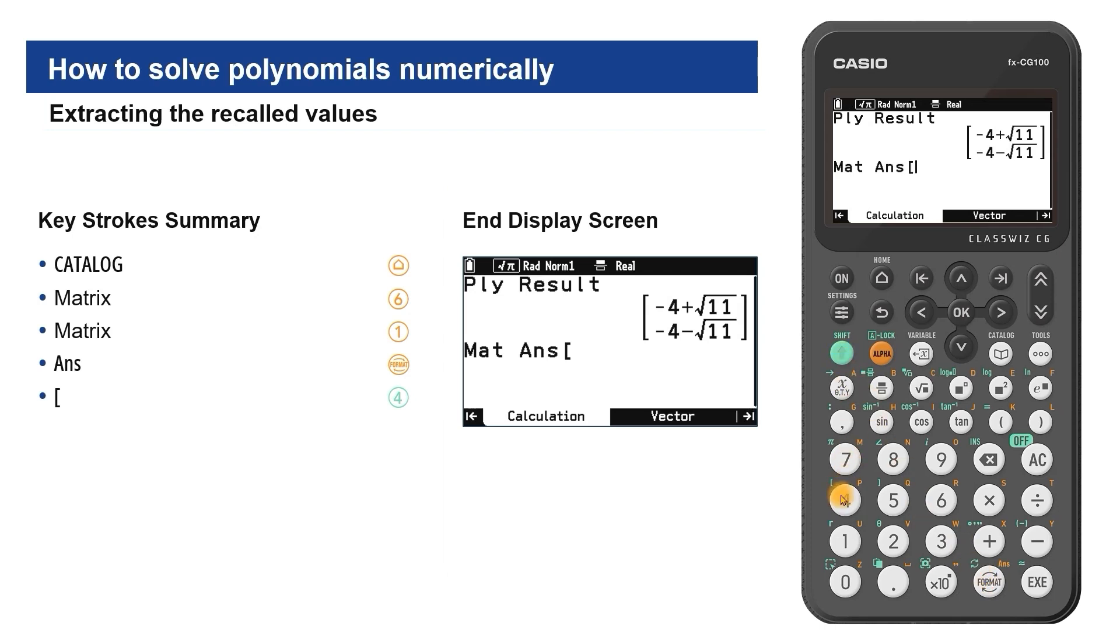If we want to extract the smallest value, negative 4 subtract root 11 for example, this is in the second row in the answer matrix. Enter this row and the column, separated by a comma. Notice we don't have to close the bracket. Confirm with OK and the exact value is extracted. Press format to see the decimal. Use a similar method with position 1-1 if the other solution value is required.